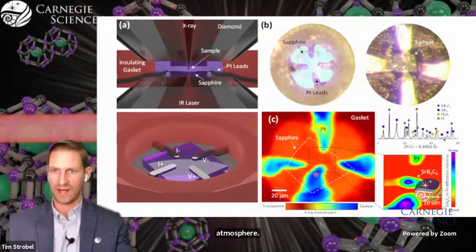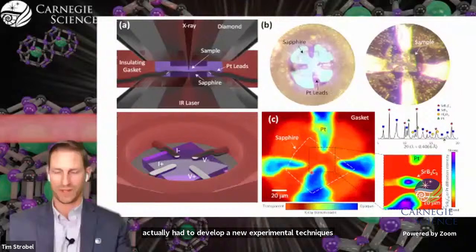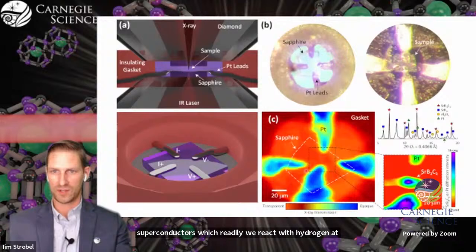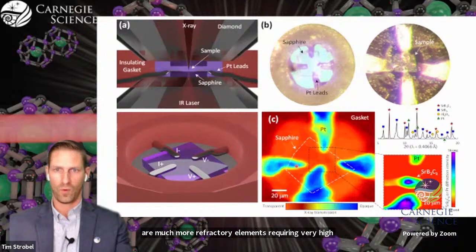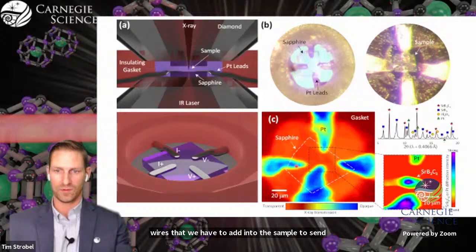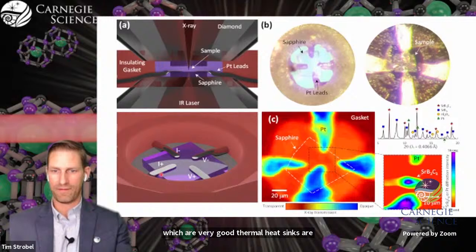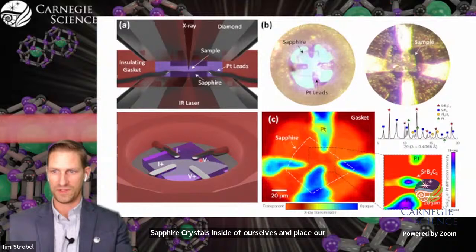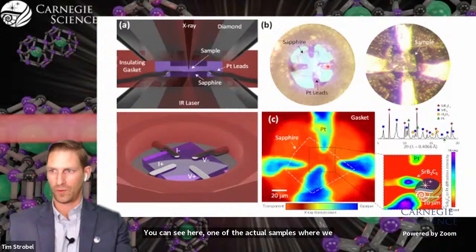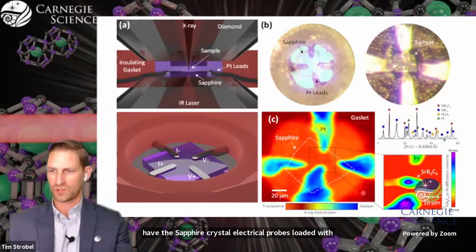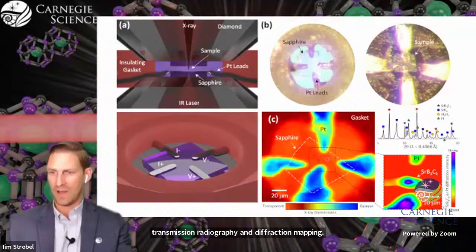In order to make these superconducting measurements, we actually had to develop a new experimental technique. Unlike the superhydride superconductors, boron and carbon are much more refractory elements requiring very high-temperature heating, which creates a problem for the wires and the diamond anvils. Our solution was to place sapphire crystals inside of our cell and place our electrical contacts on top of these sapphire crystals. Then we can do X-ray tomography, transmission, radiography, and diffraction mapping.